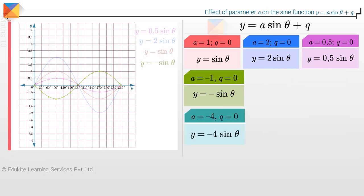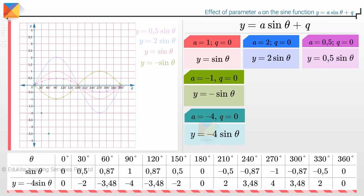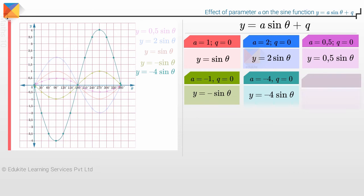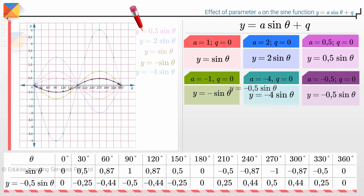Now let us draw the graph of y equals minus 4 sine theta, where a equals minus 4. We plot these points and join them with a smooth curve for y equals minus 4 sine theta. Notice that this is the graph of y equals 4 sine theta reflected about the x-axis. We can also draw the graph of y equals minus 0.5 sine theta, where a equals minus 0.5. Observe that this graph is a reflection of y equals 0.5 sine theta about the x-axis, and the graph has been compressed vertically.